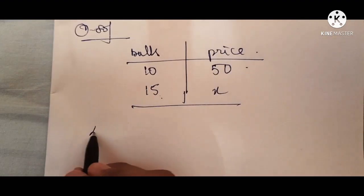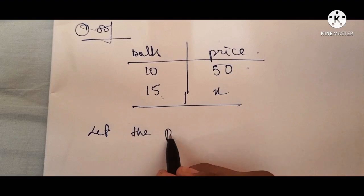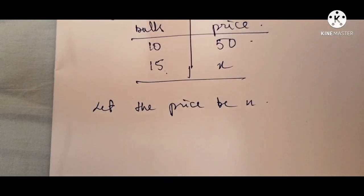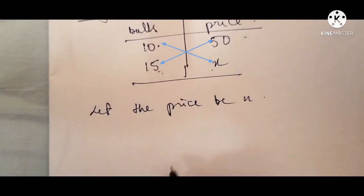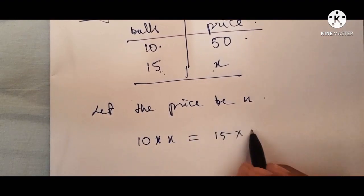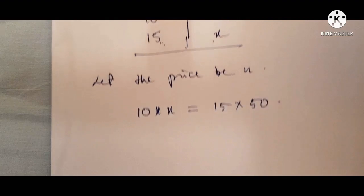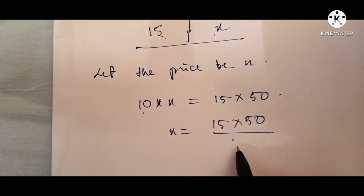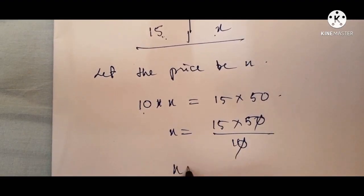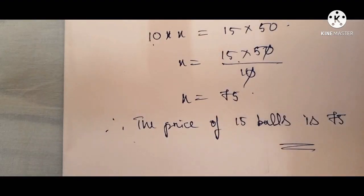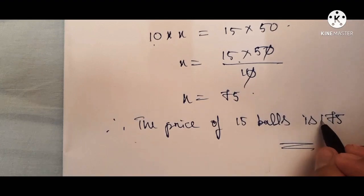Let the price be x. We will cross multiply: 10 into x equals 15 into 50. So x equals 15 into 50 divided by 10. The zeros cancel, and 15 into 5 is 75. So the price of 15 bowls is rupees 75. This is the answer to this question.